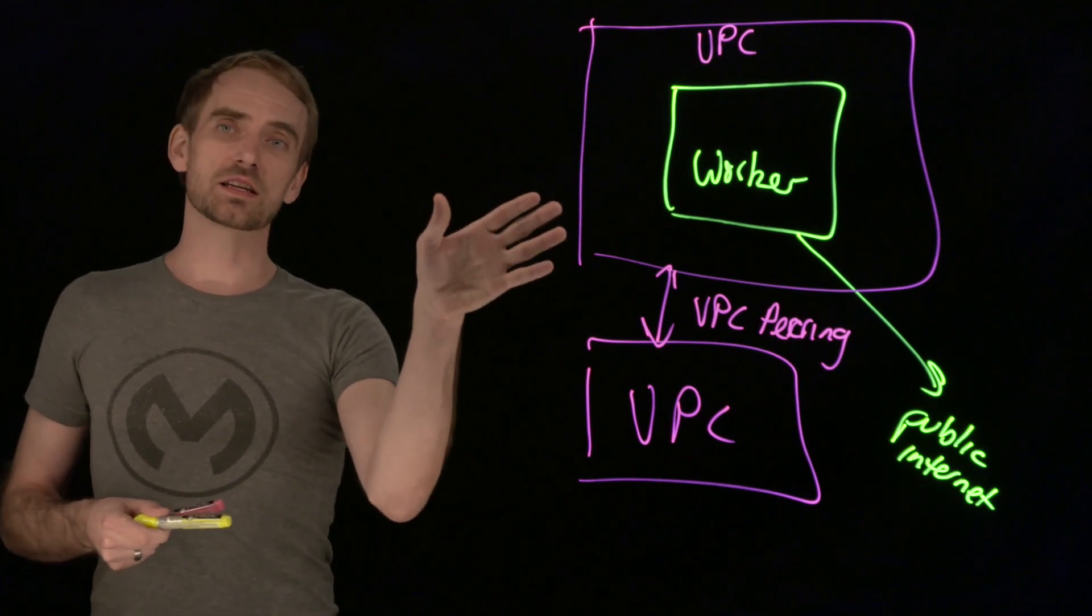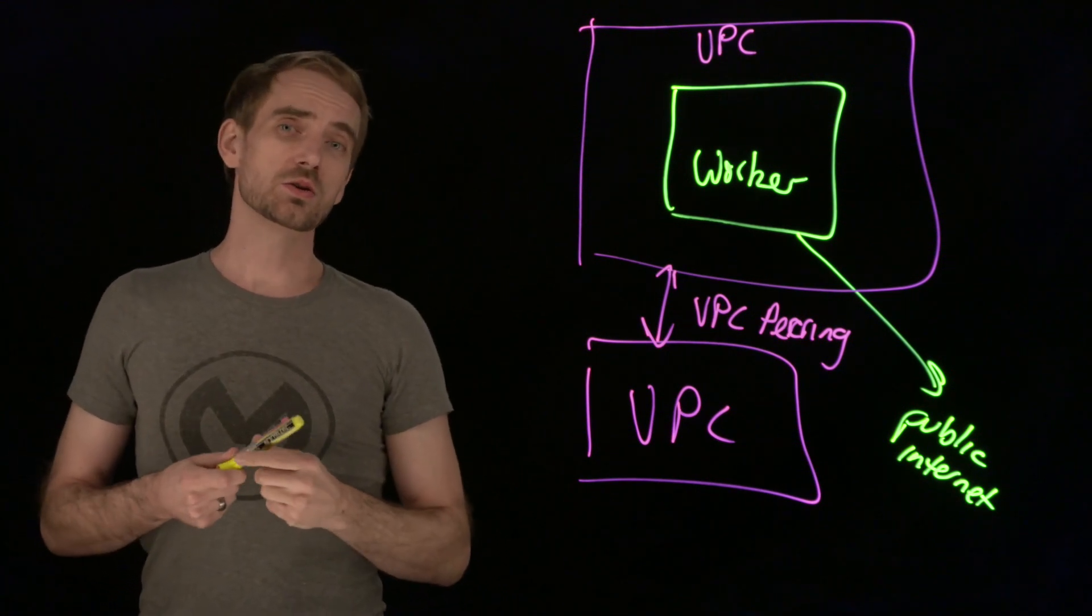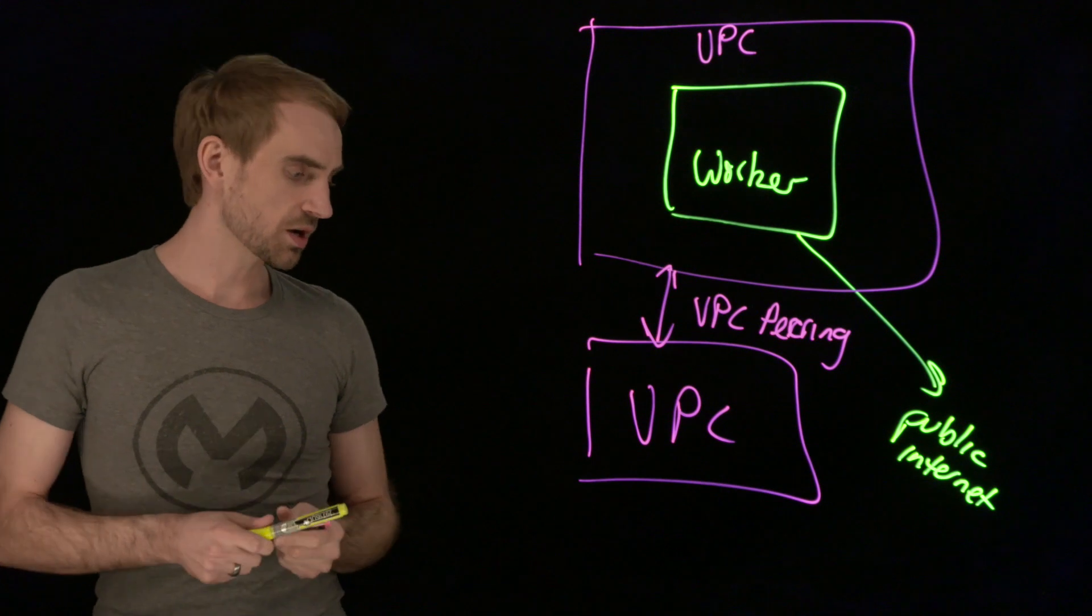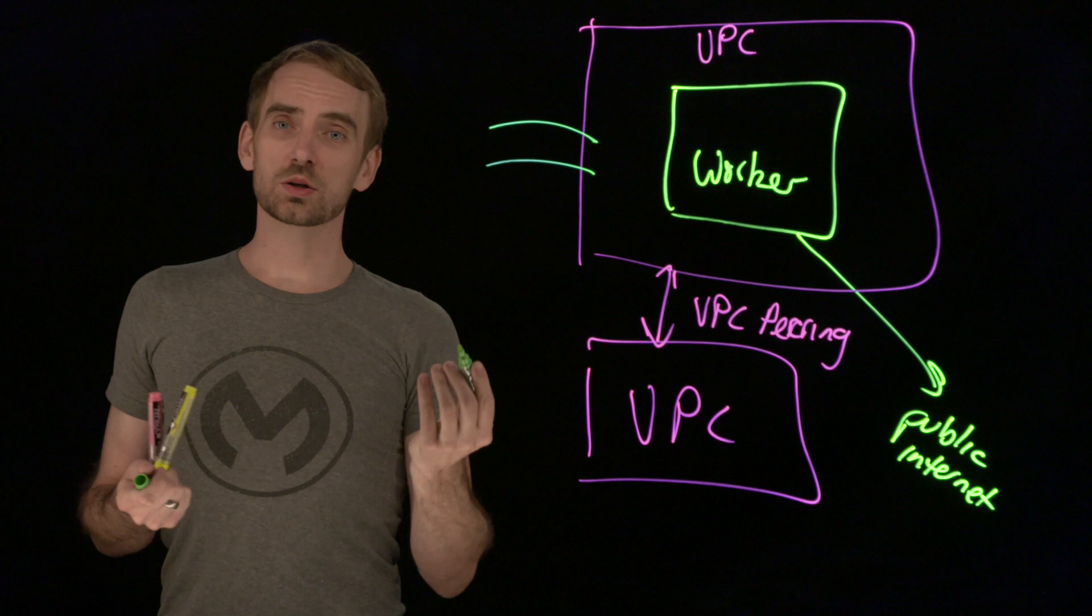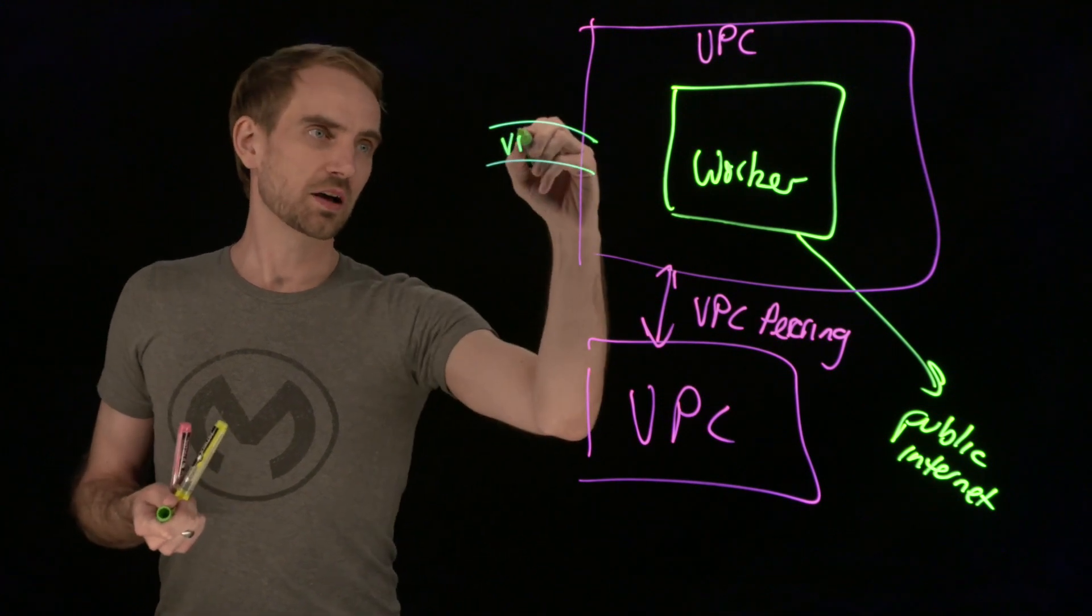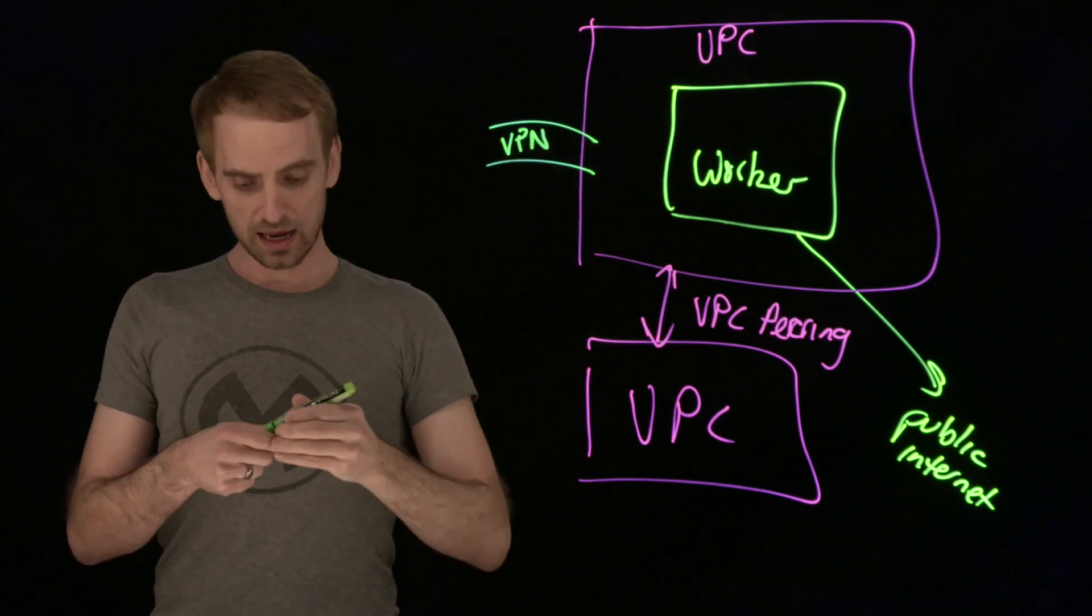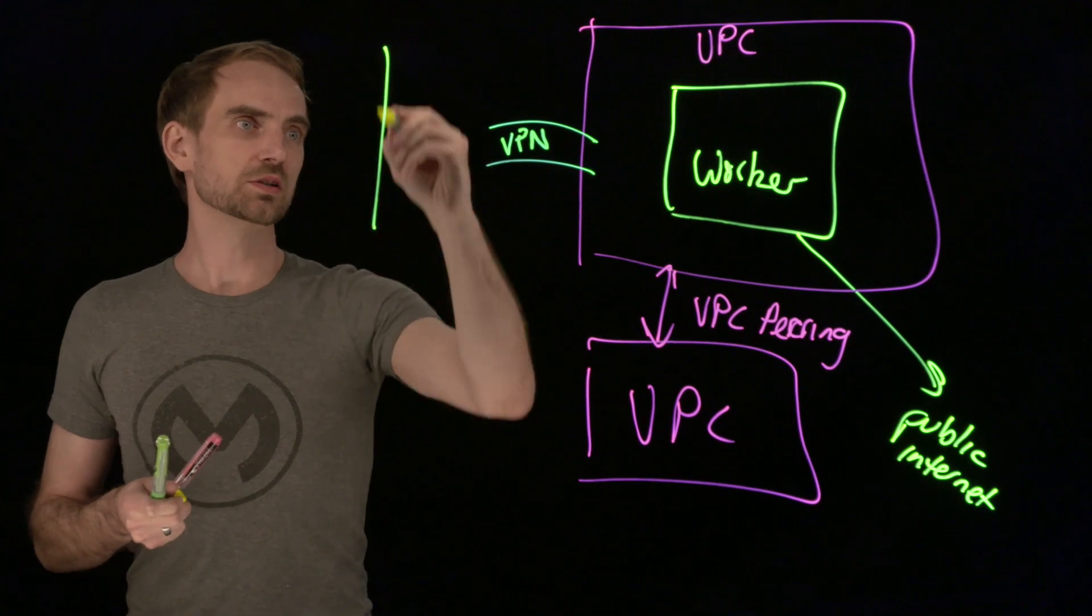But you can link VPCs to your data center using a VPN. That's another option as far as linking. Essentially it sets up a secure channel linking it via VPN that can then link to whatever your data center is.